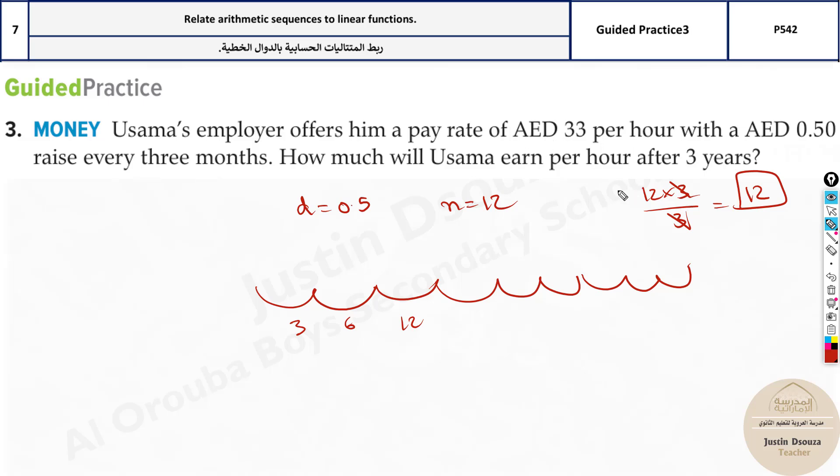Now, what is term 1? A1 is not 33. Here you need to realize that a1 is the first term. Now, what is first term? When there is an increase of 0.5 salary, right?